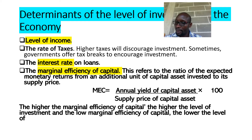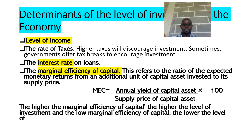Another determinant is the rate of taxes. A tax is a cost in the production process. If tax rates are high, the cost of production will be high, which indirectly discourages production. On the other hand, if consumers find products expensive because a tax has been shifted to them in the form of higher prices, that will also discourage demand and consequently affect production, resulting in low investment in the long run.